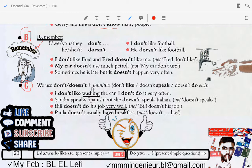We use don't or doesn't plus infinitive: don't like, doesn't speak, doesn't do, etc. I don't like washing the car. I don't do it very often. Sandra speaks Spanish but she doesn't speak Italian, not doesn't speaks. Bill doesn't do his job very well, not Bill doesn't his job. Paul doesn't usually have breakfast, not doesn't has.